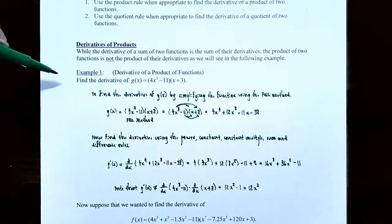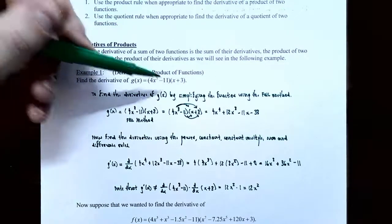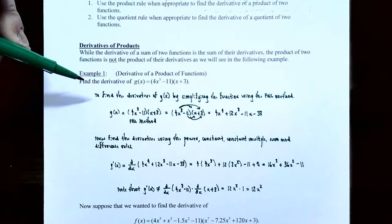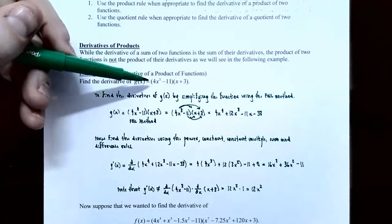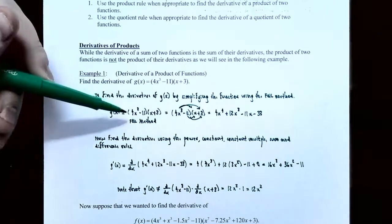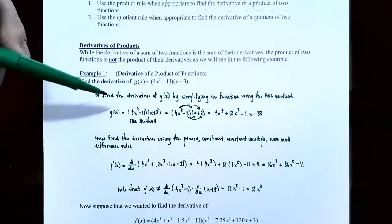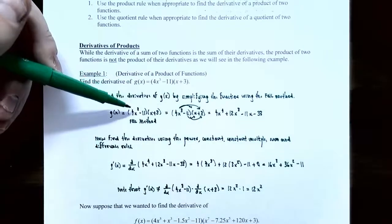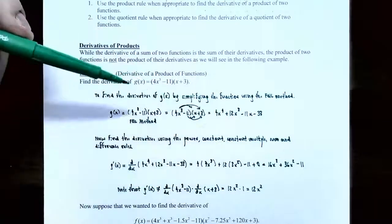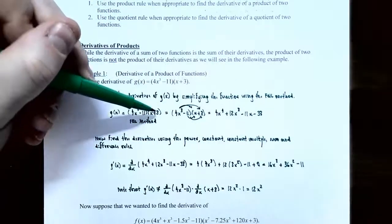To see that, we'll do Example 1: the derivative of a product of functions. Find the derivative of g(x), which is (4x³ - 11)(x + 3). Using derivative rules established so far, we'll simplify using the FOIL method. First terms: 4x³ times x gives 4x⁴. Outside: 4x³ times 3 gives 12x³. Inside: -11 times x gives -11x. Last: -11 times 3 gives -33.